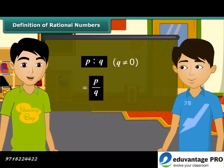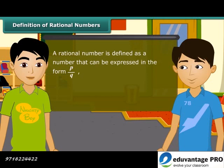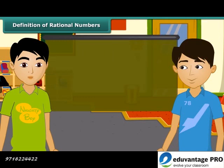This is the form in which rational numbers are expressed. A rational number is defined as a number that can be expressed in the form P by Q, where P and Q are integers and Q is not equal to 0. Rahul, now you tell me: is 4 by 5 a rational number?